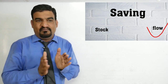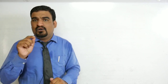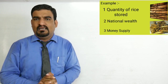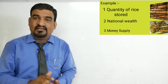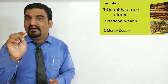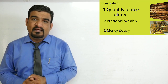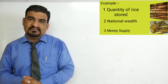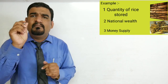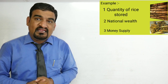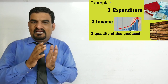If I say goods stored in a warehouse — is it stock or flow? It is stock, because we can measure it at a particular point of time only. Now, national wealth is also an example of stock, because we can measure it at a particular point of time only.